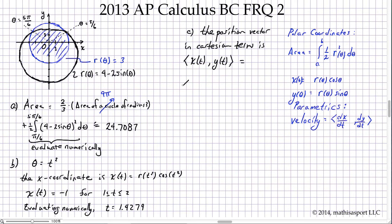That's equal to: four minus two sine of t squared, and then that whole thing has to be multiplied by cosine of t squared. The other coordinate is the same thing: four minus two sine t squared times the sine of t squared.